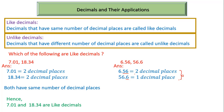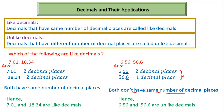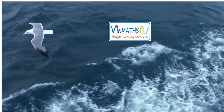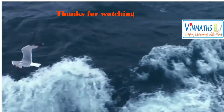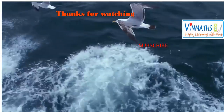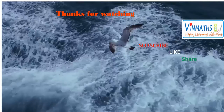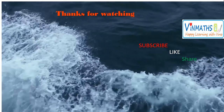As you can see, there are different decimal places. Both decimal numbers do not have the same number of decimal places. Hence we will say that 6.56 and 56.6 are unlike decimals. This is how we identify like and unlike decimals.